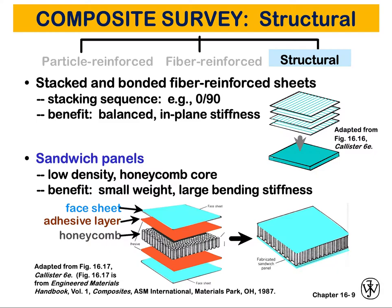We have two distinct designs: laminar composites and sandwich panels, which are the two most common structural composites. In laminar composites, you have stacked and bonded fiber-reinforced sheets — each sheet is already a composite. We stack them on top of each other with different orientations of the fibers, from 0 to 90 degrees, so the fibers are orthogonal in direction. The sheets are aligned with different angles, and the benefit is balanced and predictable in-plane stiffnesses.